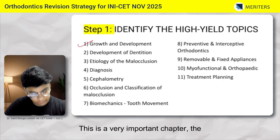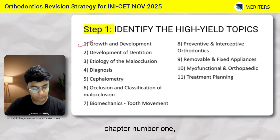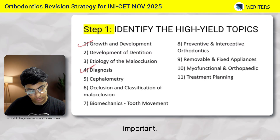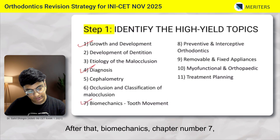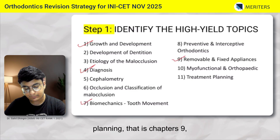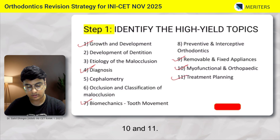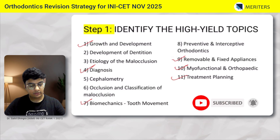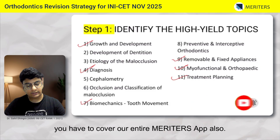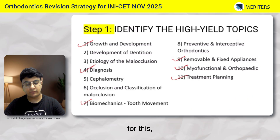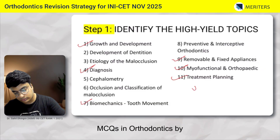First, growth and development — this is a very important chapter, chapter number one. Then chapter number four, diagnosis, is important. After that, biomechanics, chapter number seven, followed by appliances and treatment planning, that is chapters 9, 10, and 11. For these high yield topics, you have to cover our entire Meritors app, and we also have a separate book: MCQs in Orthodontics by Dr. Jitendra Sharan.